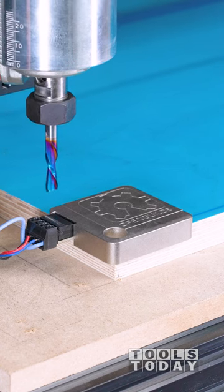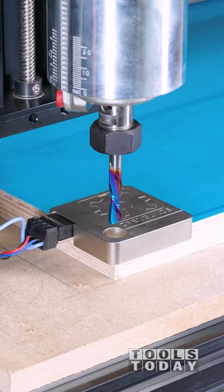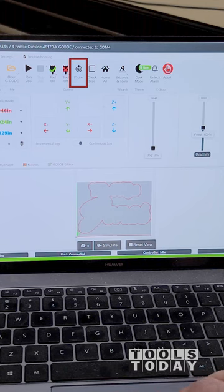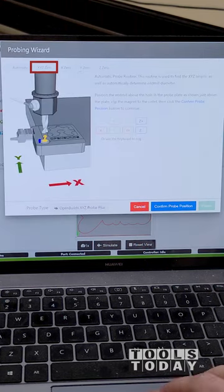The OpenBuild XYZ Touch Probe Plus accurately sets all three of those with one command. First, I move the bit over the hole in the probe, then I attach the probe magnet to the collet.